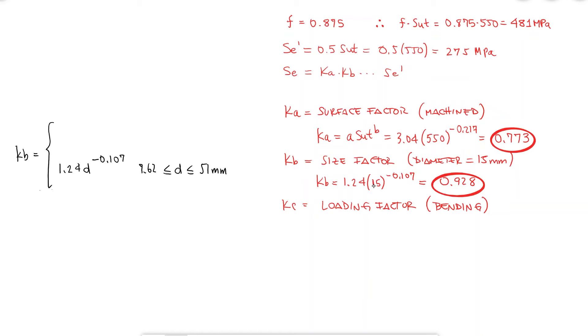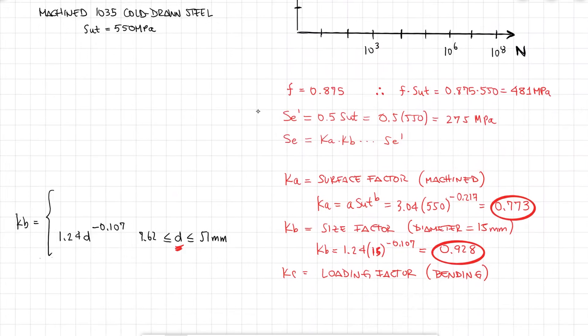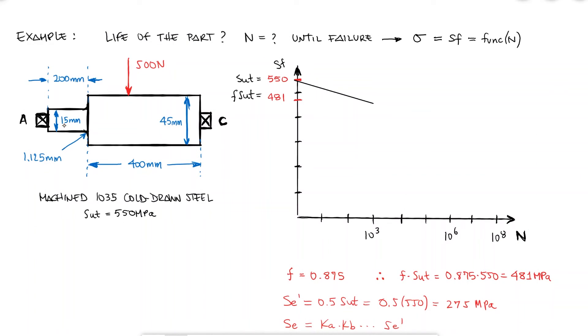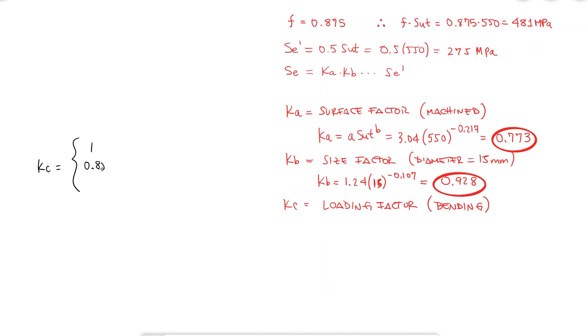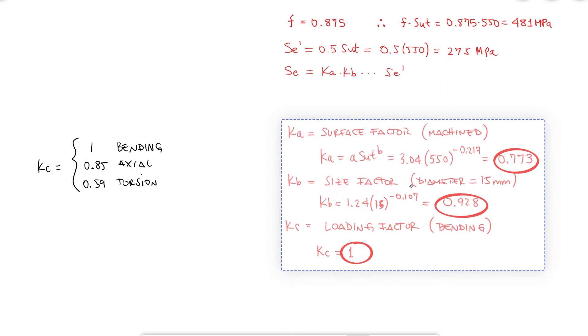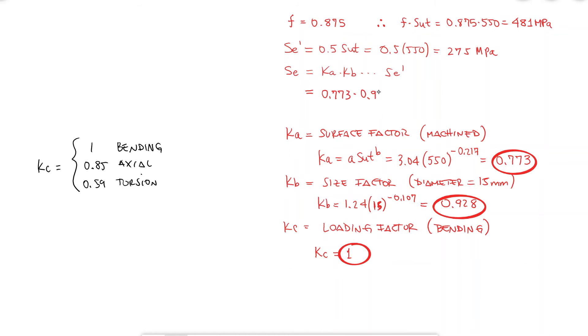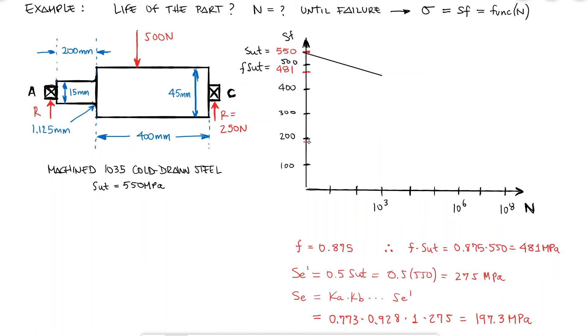And notice that I'm using the diameter for the smaller section, since that is where the maximum stress is going to occur. Finally, for the loading factor, I know that this rotating shaft is going to be subjected to bending, a completely reversed normal stress, which results in a KC of 1. And therefore, my endurance limit, accounting for the Marin factors, is equal to 197.3 MPa, which is the other value I need to know for the second inflection point of the SN diagram. With this, I have fully defined the fatigue strength for any number of cycles for this part specifically.